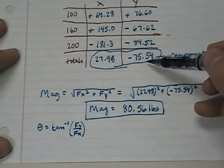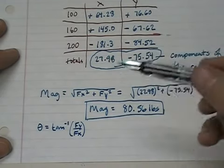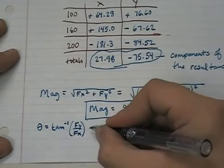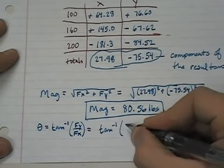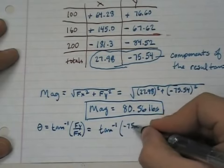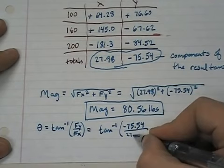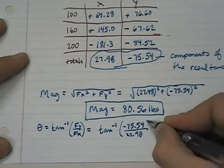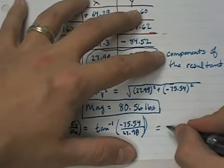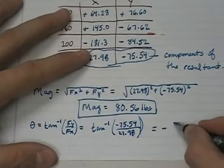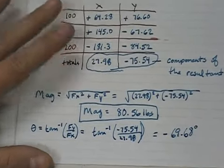So, Fy is negative 75.54 and Fx is 27.98. So we simply take the inverse tangent of negative 75.54 over 27.98. And if you do that, you come up with an angle of negative 69.68 degrees.